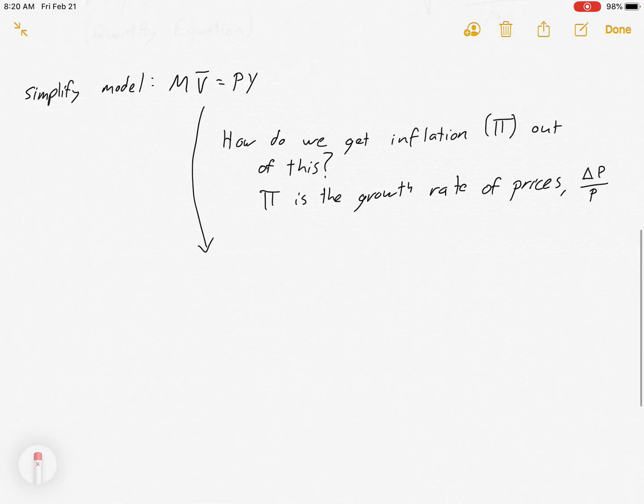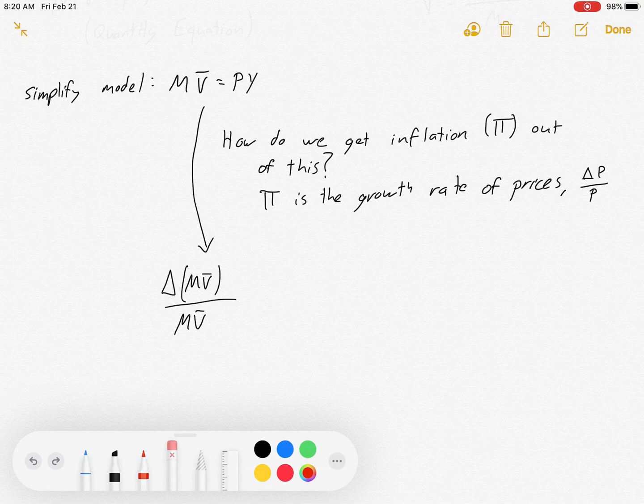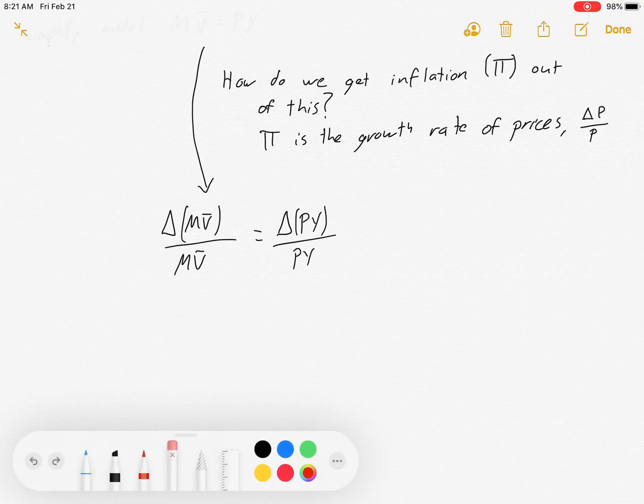So let's bring it down a little further. Let's say the growth rate of the left-hand side, delta MV bar over MV bar, equals the growth rate of the right-hand side. Now there's a couple rules of thumb with growth rates, and one of them is that the growth rate of a product is approximately equal to the sum of their growth rates.